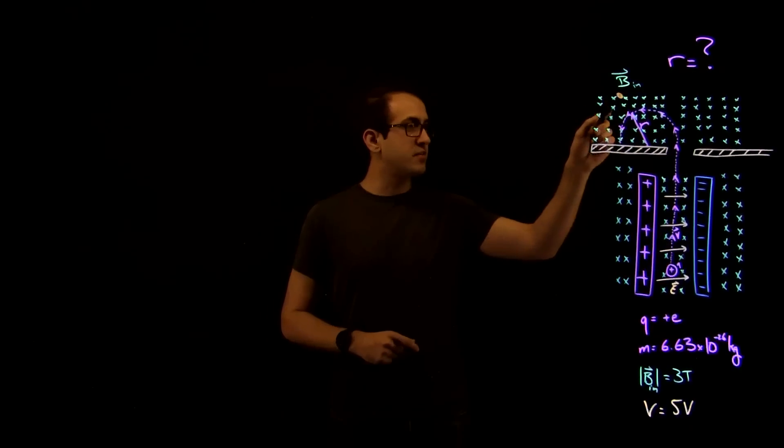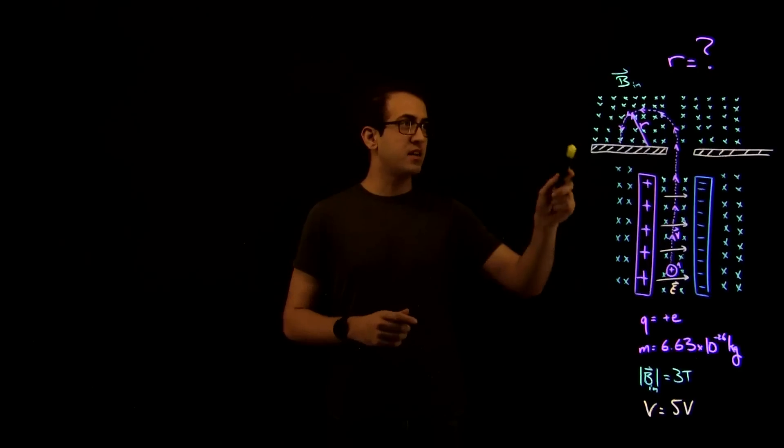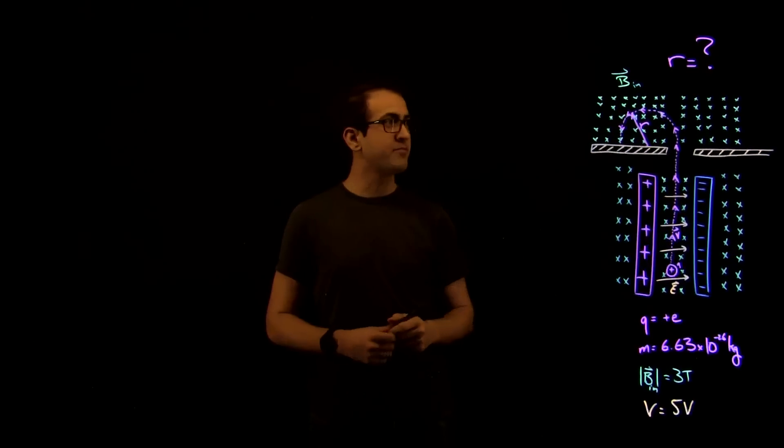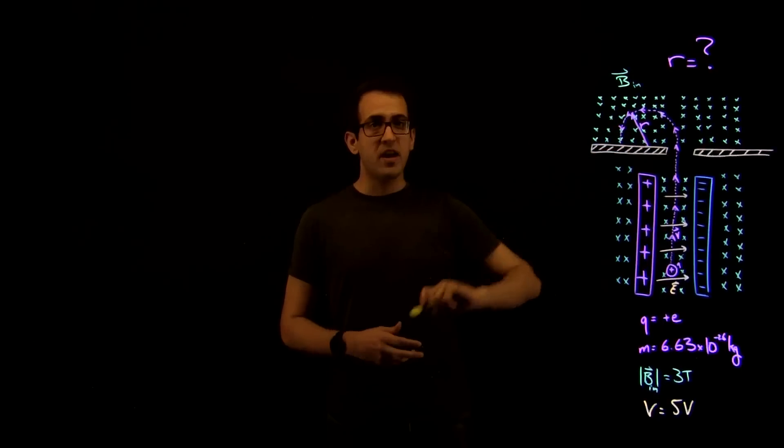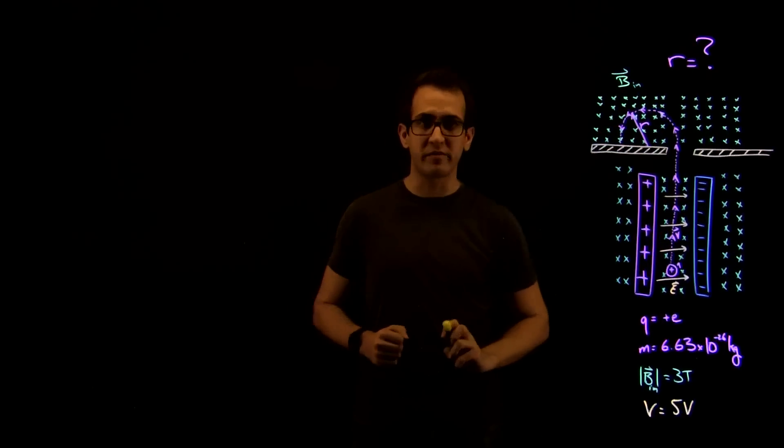So when it enters the mass spectrometer, which has a magnetic field here with a magnitude of 3 tesla, it will curve, and what we want to find is the radius of curvature there.